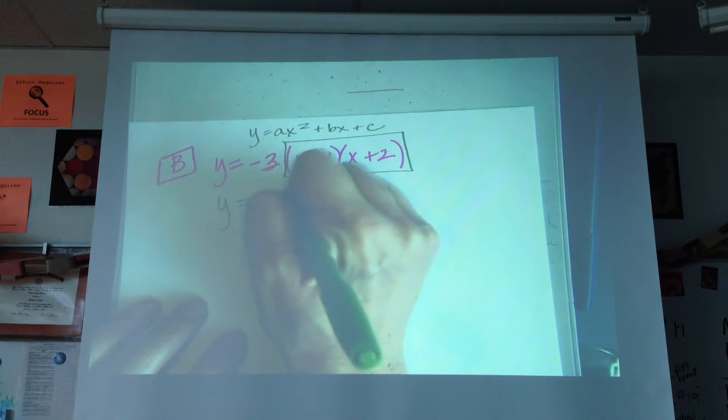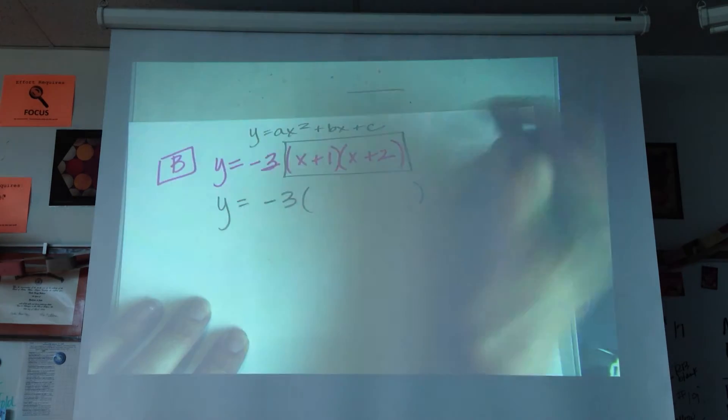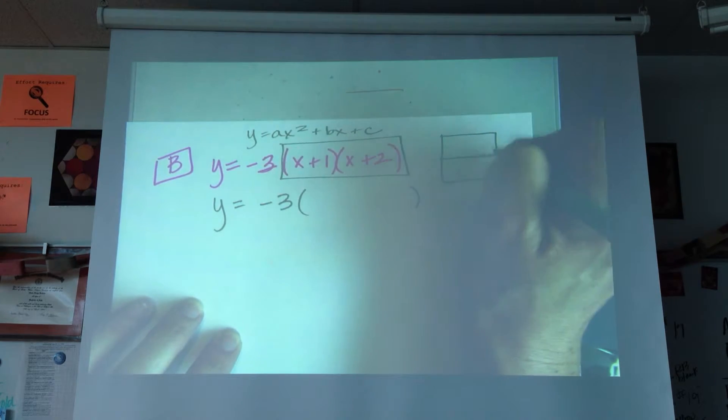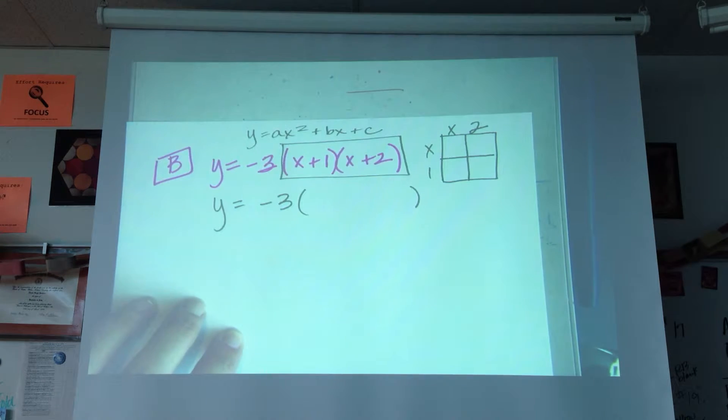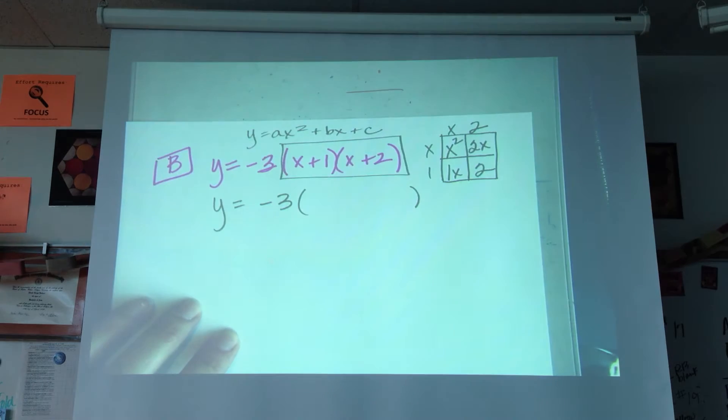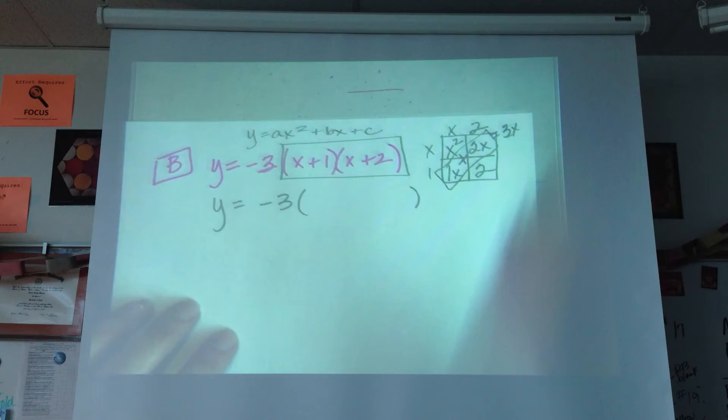So I'm going to do some work to find out what trinomial, three terms, wind up when I expand this. My expansion of this is going to look like X plus 1, X plus 2. Then I go in and I do my multiplying. That's going to give me an X squared, that's going to be a 2X, a 1X, and a 2 in the corner. When I pull these out of here, that's going to give me a 3X.